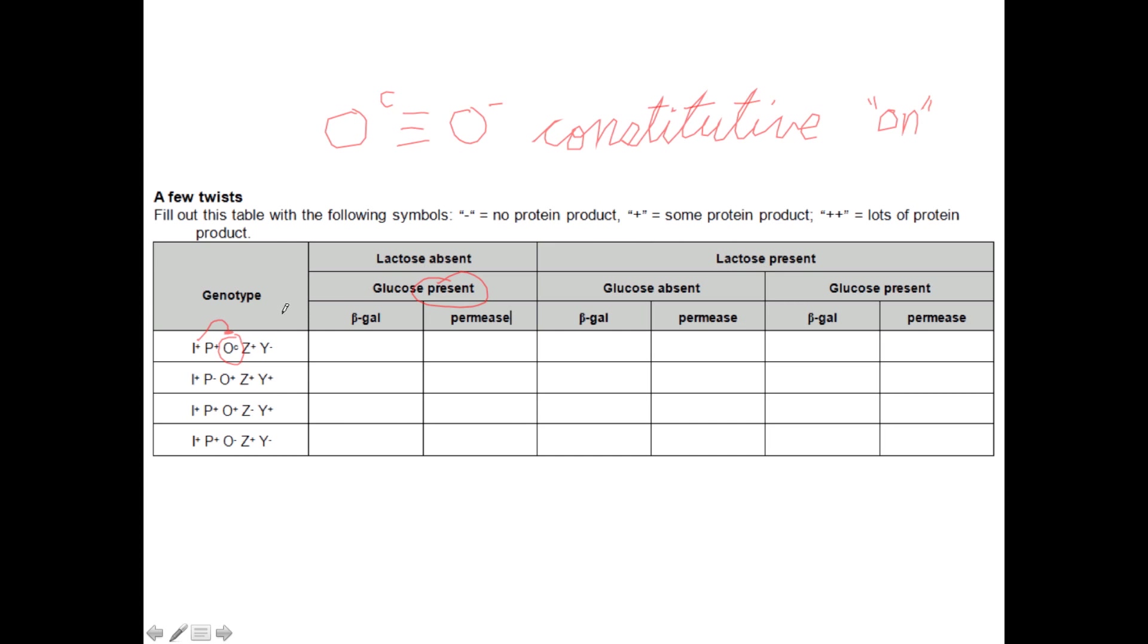Now to further parse this a little bit, we've got a broken Y and so we'll never be able to make the permease in these conditions. But can we make the beta-galactosidase? Well it turns out that we do have a perfectly good beta-galactosidase there, so we'll give it a plus sign. We'll give it a plus sign there and we'll give it a plus sign there. So even when lactose is absent, there's no way to turn it off, and that's why I put a plus sign in this region right here.